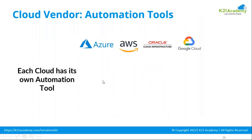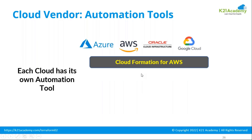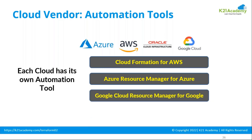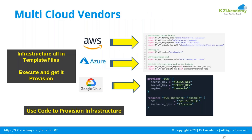Each cloud has its own automation tool — CloudFormation for AWS, ARM Templates (Azure Resource Manager) for Azure, and Google Cloud Resource Manager for GCP. The challenge with these tools is that CloudFormation can only automate provisioning on AWS; you can't use it on Azure. ARM is only for Azure. But Terraform changes this — Terraform helps you infrastructure everything, regardless of the provider.